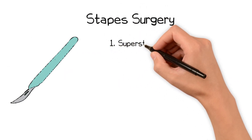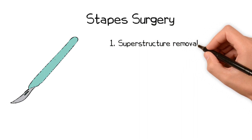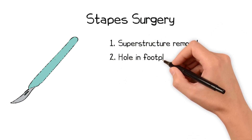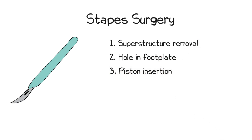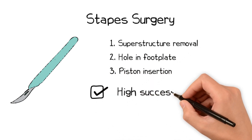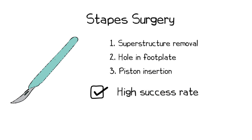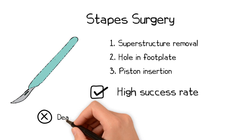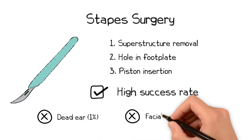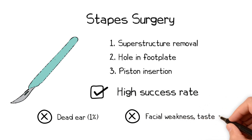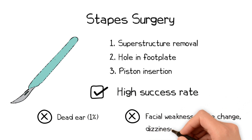Stapes surgery involves removing the stapes superstructure, making a hole into the fixed stapes footplate, and placing a piston that connects the long process of the incus to the vestibule of the inner ear. This has a greater than 90% chance of success, where the air-bone gap is reduced to less than 10 decibels. The main risk of a dead ear is quoted at approximately 1%. Additional risks include facial weakness, taste disturbance, dizziness, and worsening tinnitus.